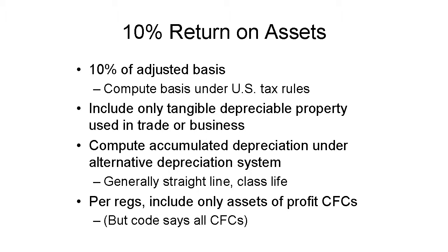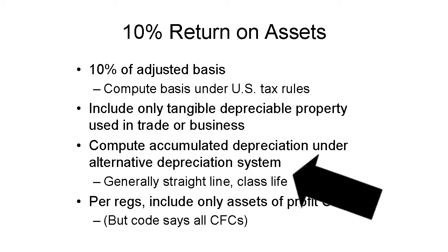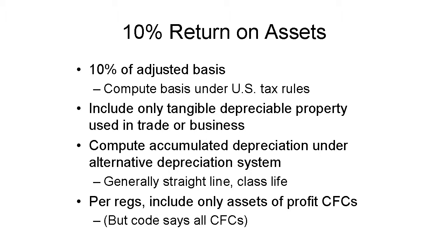The 10% amount is 10% of the adjusted basis of depreciable tangible property. Thus, you must determine cost and reduce it by accumulated depreciation. Again, all this is done under U.S. tax principles. Remember, a bigger 10% amount is a good thing — usually.